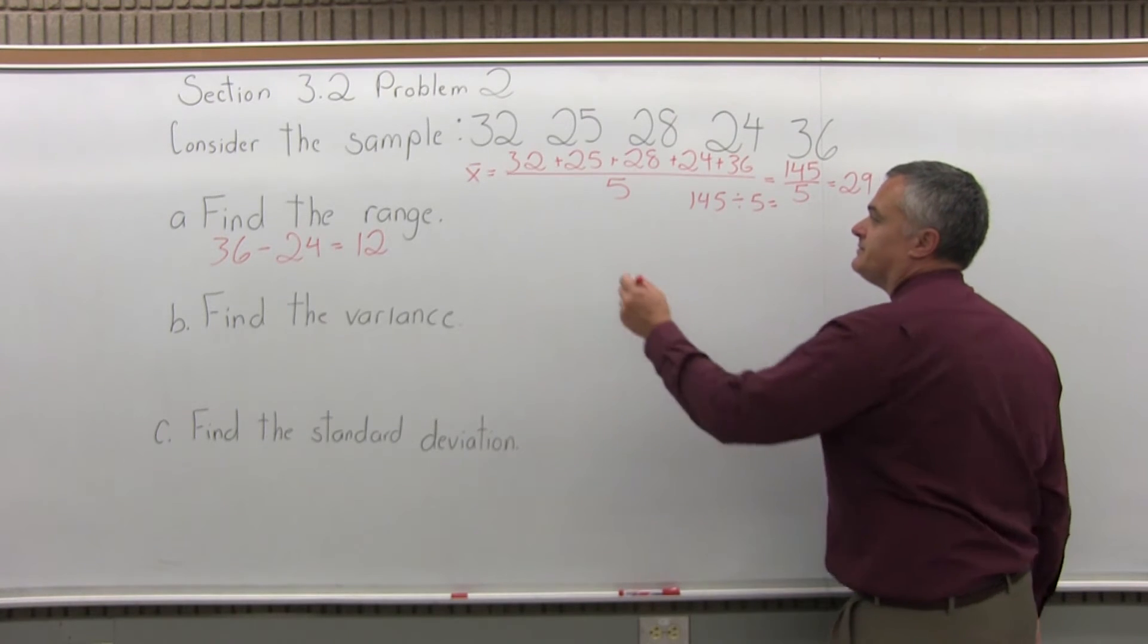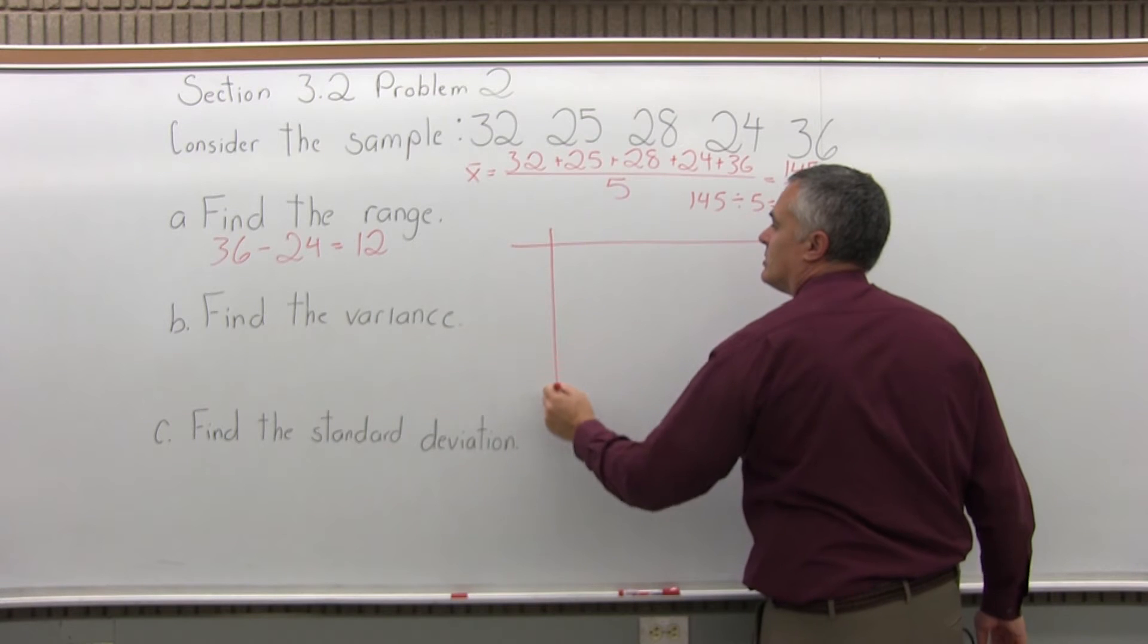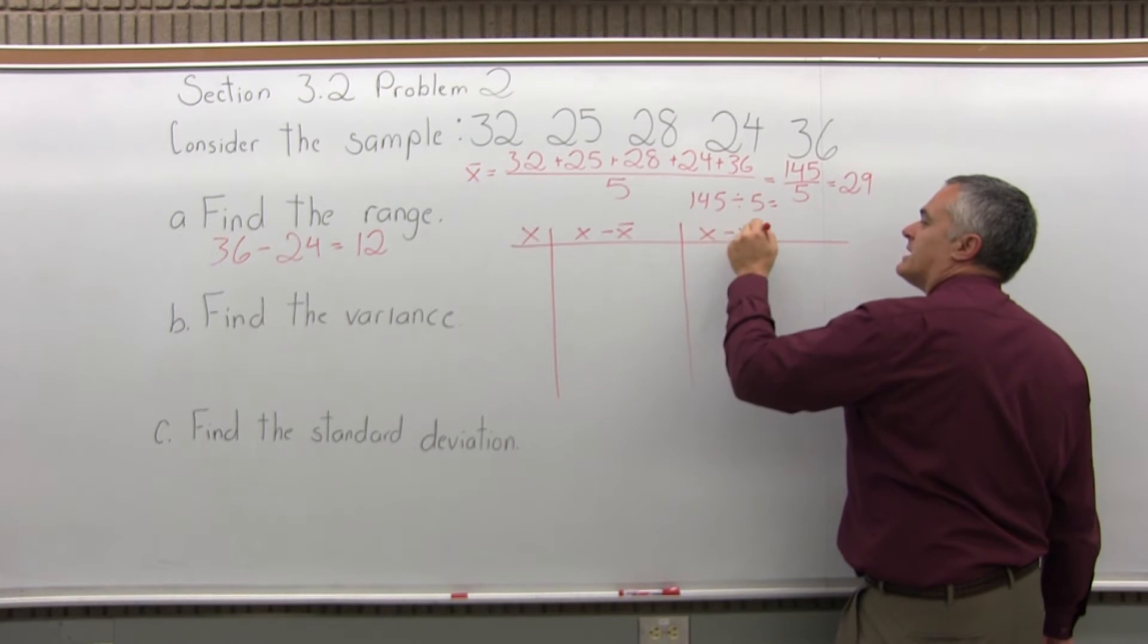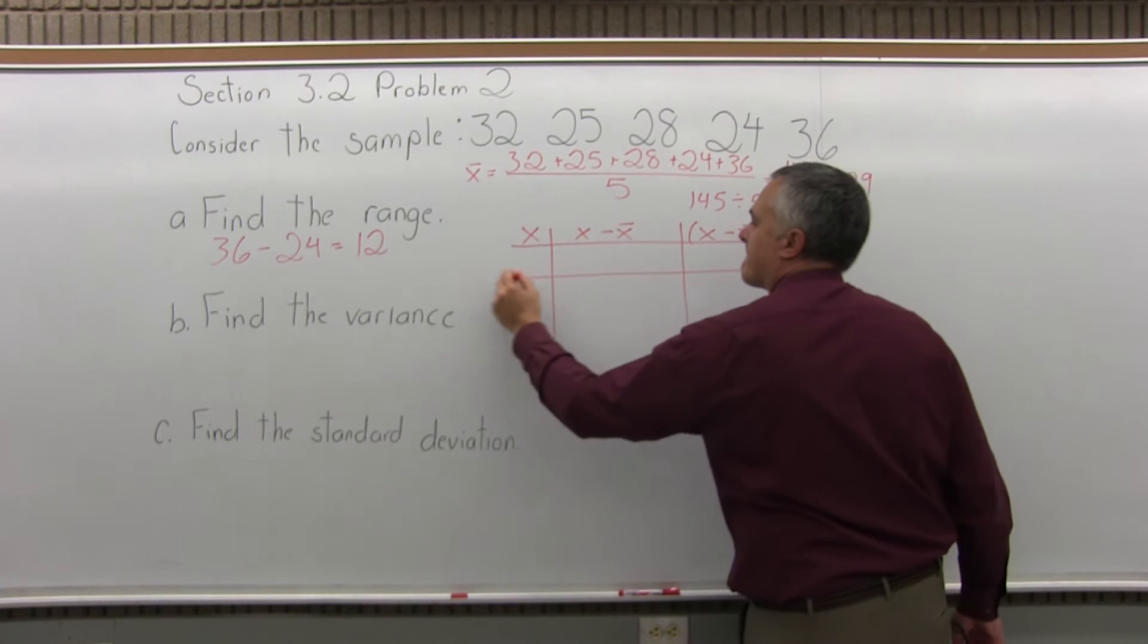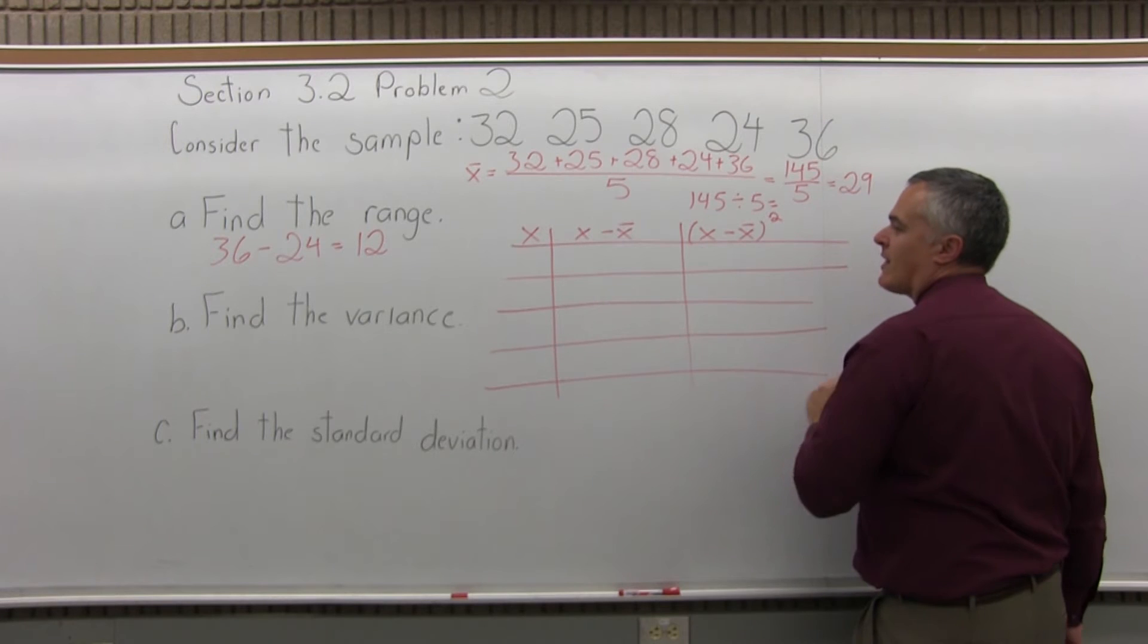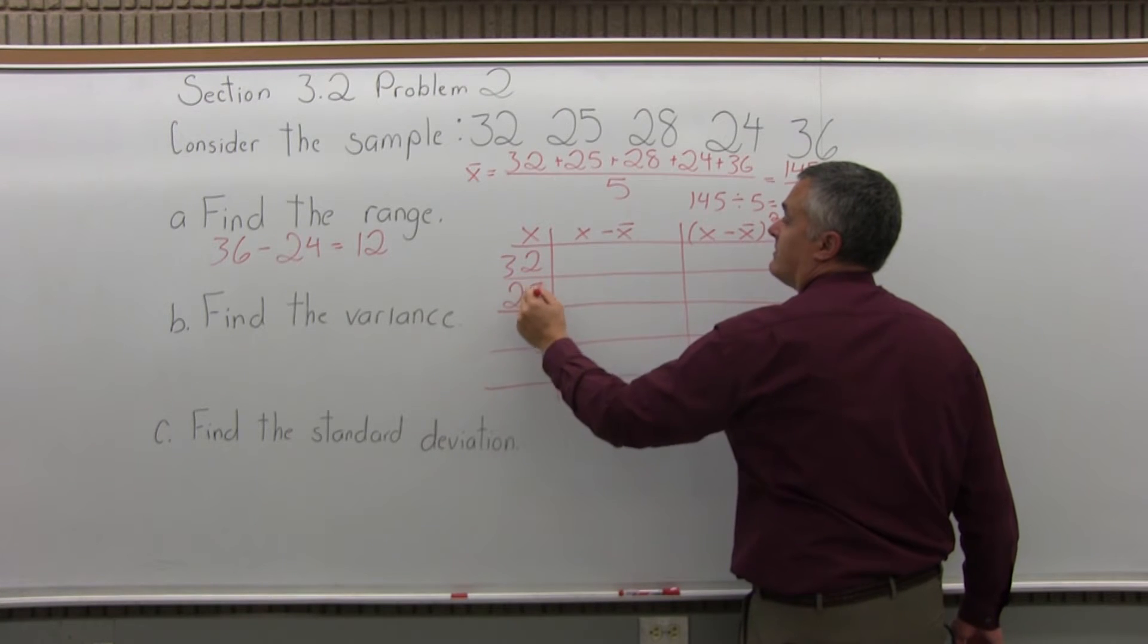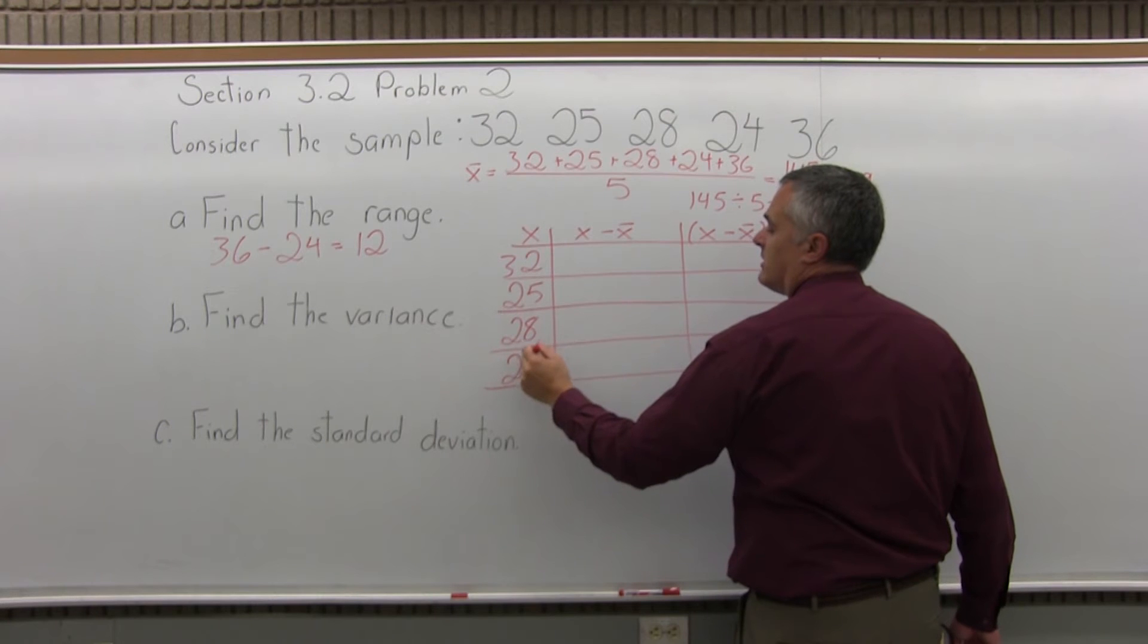Step two, fill out the chart. The chart that we fill out has three columns. The first is labeled X. The middle is X minus X bar. And the last one is X minus X bar in parentheses raised to the second power. The first column X is just the data that's given in the problem. So, for this problem is 32, 25, 28, 24, and 36.